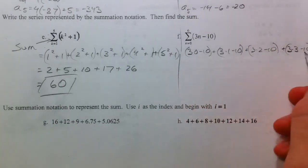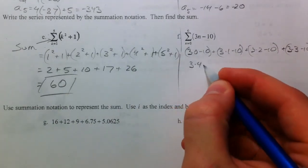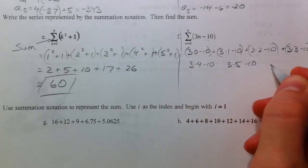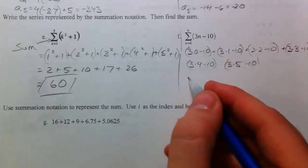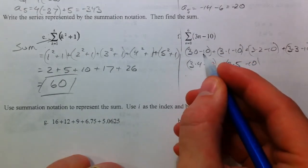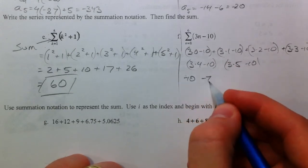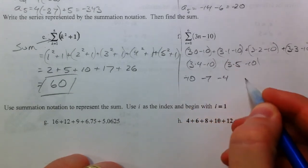3 times 3 minus 10, 0, 1, 2, 3, 4, 5. And so, what you'll notice is that this is negative 10, negative 7, negative 4,